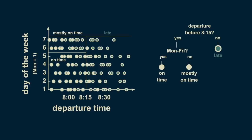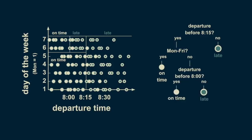We can further refine our estimate by subdividing our weekend pre-8:15 departure times into before and after 8 o'clock. Before 8 o'clock, almost all of the arrivals are on time, and between 8 and 8:15 the majority of them are late. Now we have our two-dimensional decision tree neatly divided into four regions — two reflecting on-time arrivals, and two showing late arrivals. This is a three-level decision tree. Note that not all branches need to extend down to the same number of levels.